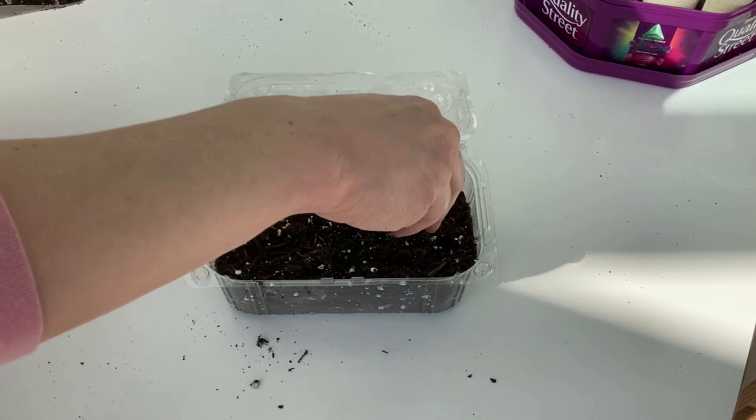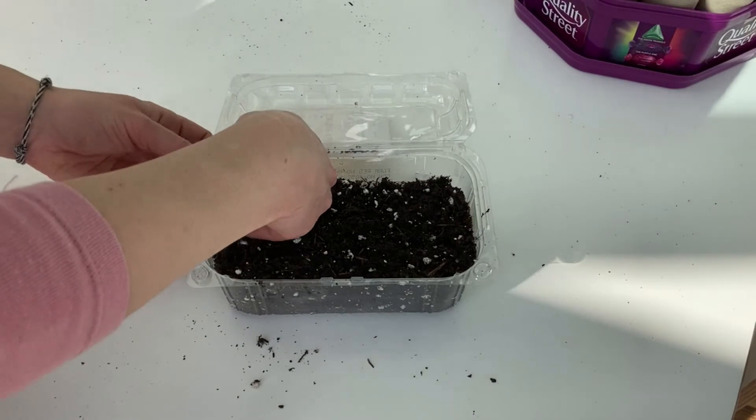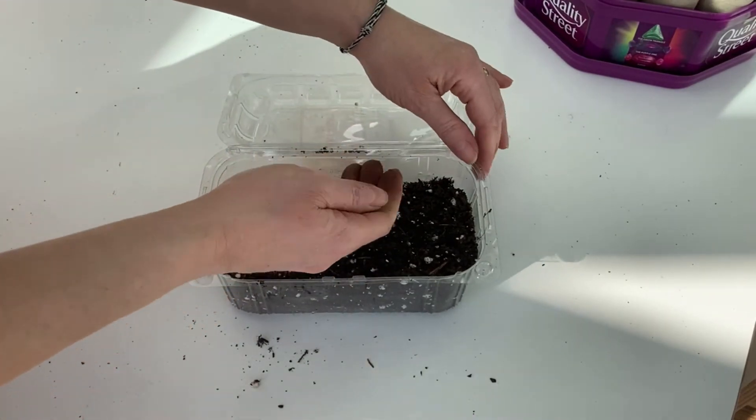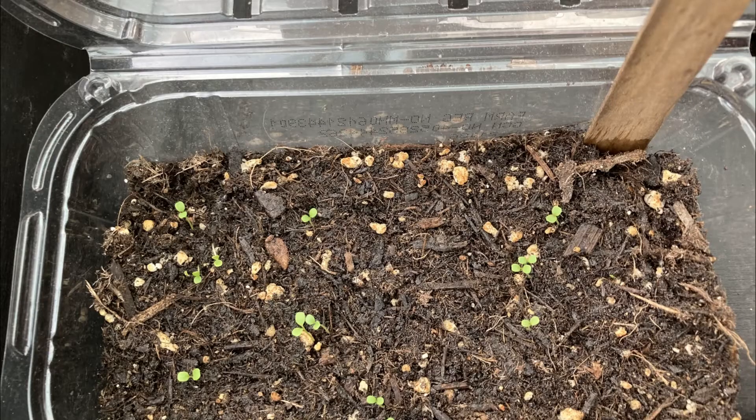Very lightly cover them with some soil, gently firm down, label and water from underneath. As soon as the compost on the surface is damp, then close the lid and pop them on a warm windowsill. This is what they look like when they come through, pretty tiny at the moment.